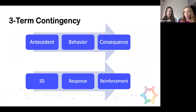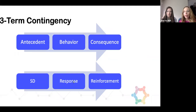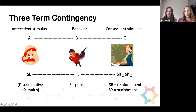Then you have your response or your behavior, and then either your reinforcement or your punishment. In ABA, when you're teaching skill acquisition programs, you have your reinforcement. So what does that look like from an example standpoint?